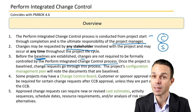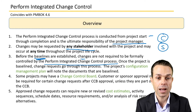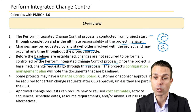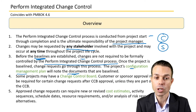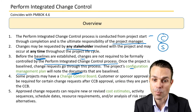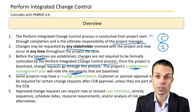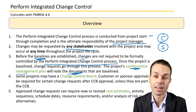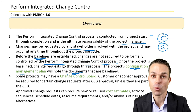But once something is baselined or locked at a point in time, change requests have to go through this process — anything has to go through the proper change request process. The project's configuration management plan will note the documents that are baselined, which you'll see come up sometimes in your PMP exam. The configuration management plan tells us which documents need to be baselined, and the change management plan tells us how to go about making those changes and informing the right people.